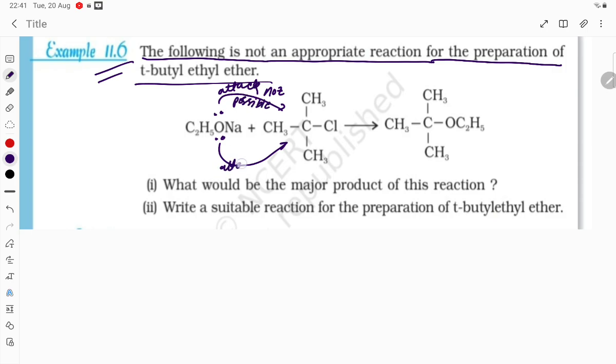Attack is not possible because backside attack has to take place in case of SN2. Since it is going to be an SN2 reaction, the question asks what would be the major product of this reaction? The major product of this reaction will be alkene. This is going to be alkene.